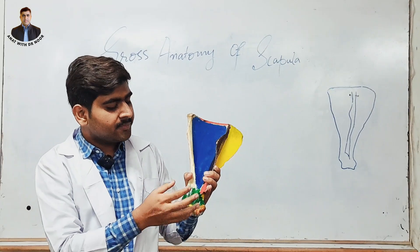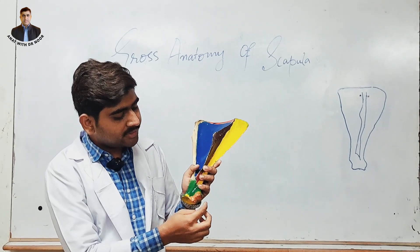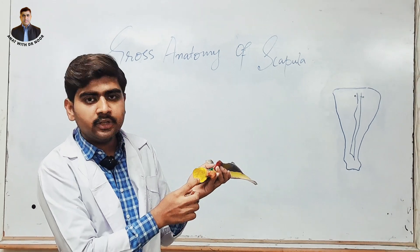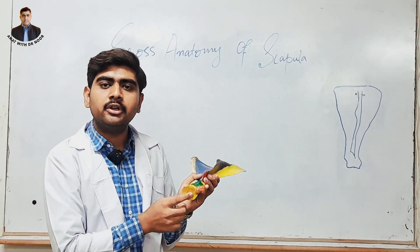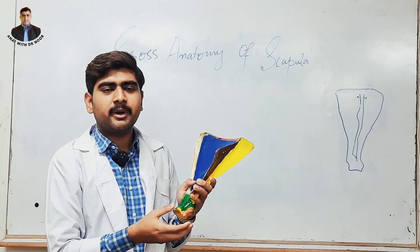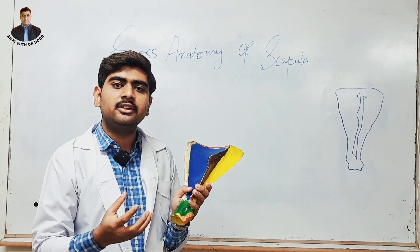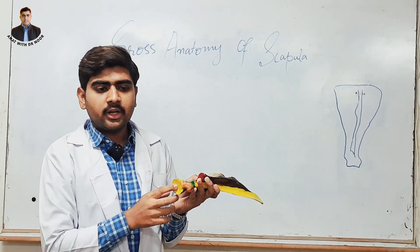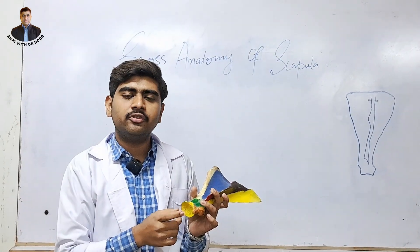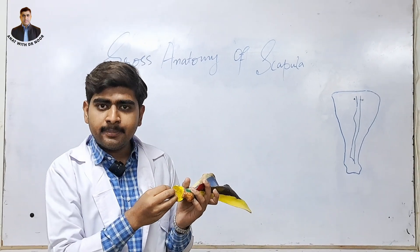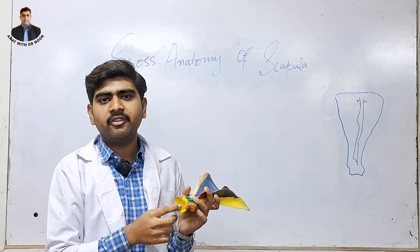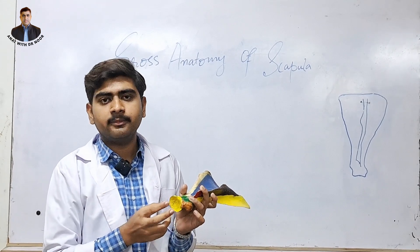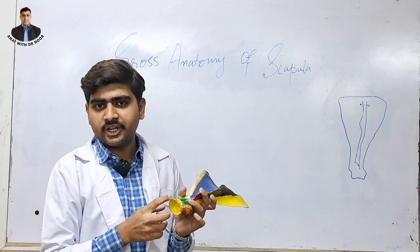Now we discuss the ventral angle of the scapula. Here we can see the supraglenoid tubercle, the infraglenoid tubercle, and the glenoid cavity, which makes articulation with the humeral head. By the glenoid cavity we can differentiate whether the scapula is of ox or cow. The glenoid cavity of the ox is deep and circular in shape, but the glenoid cavity of the cow is not as deep and is oval in shape.